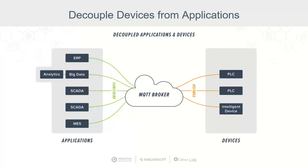We can have devices or PLCs with edge devices in front of them publish data into infrastructure, and then we can have multiple consumers of that data. We can basically allow anything to tap in and work with that data, and we can have new devices plug in — very plug and play, much more robust, much more scalable system at the end of the day.